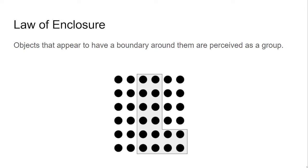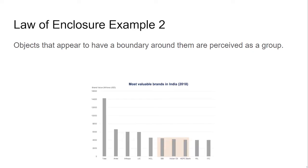With the law of enclosure, objects that appear to have a boundary around them are perceived as a group. Here, a gray polygon enclosing a group of black dots creates a sense of connection. Here is another basic example where bar graphs are bounded by a box in a way that makes them seem connected.